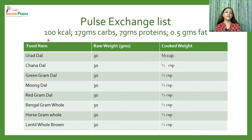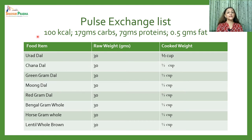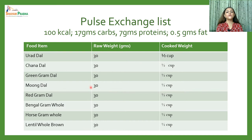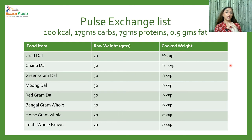For the pulse exchange list, one exchange provides 100 kilocalories, 17 grams of carbohydrates, 7.5 grams of protein, and 0.5 grams of fat. Food items include different types of dals — urad dal, chana dal, green gram, red gram, Bengal gram, horse gram, and lentil. Thirty grams raw weight equals one exchange, or approximately half a medium katori of cooked dal.